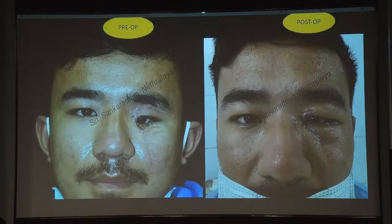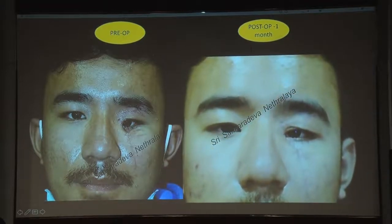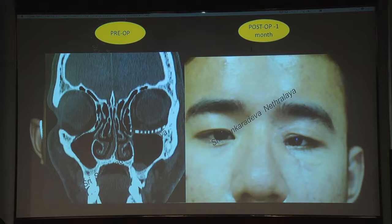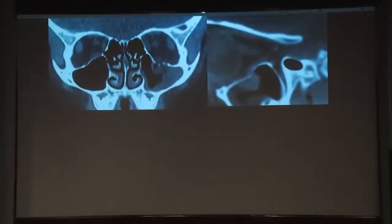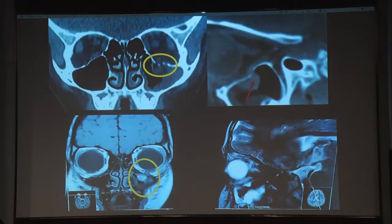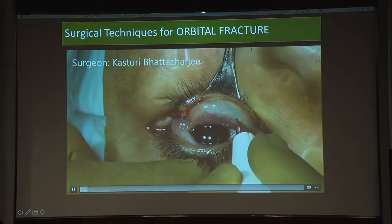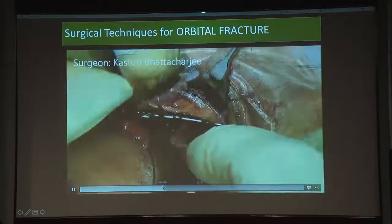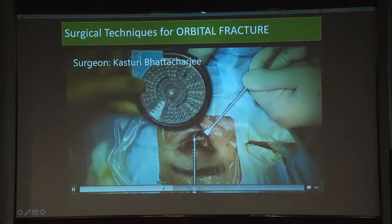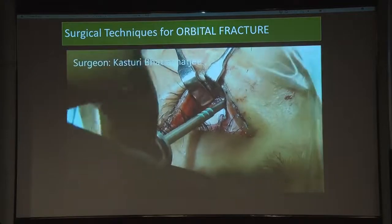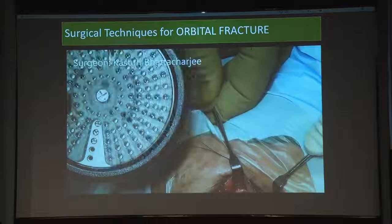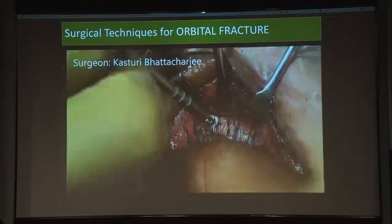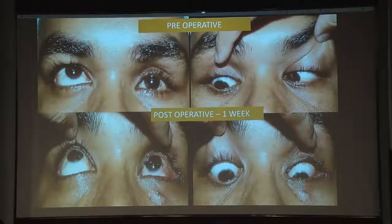Skipping the surgical steps, you can see the post-operative correction at one month — canthal dystopia corrected, implants visible in the inferior and medial walls. In several other patients we have used the navigation system combined with 3D planning. Titanium implants are particularly useful because they are inert and MRI-compatible — patients with titanium implants can safely undergo MRI without harm.